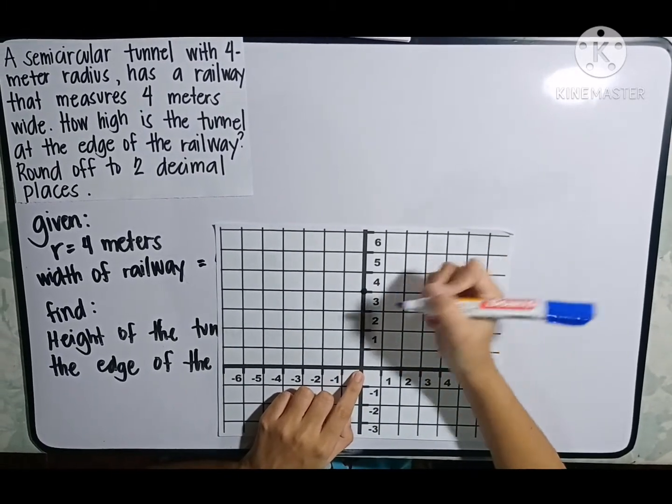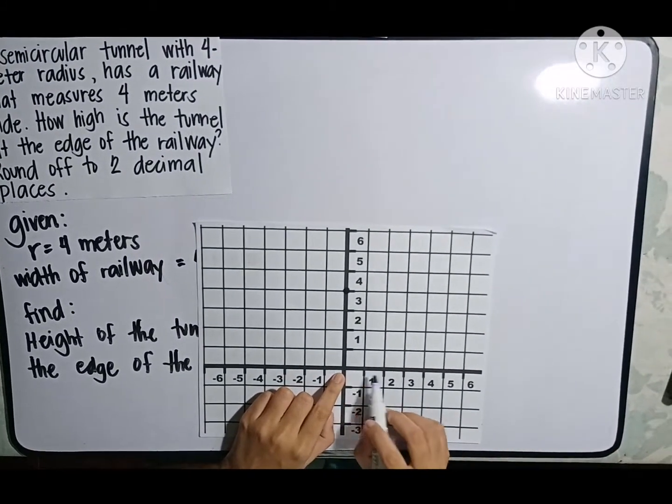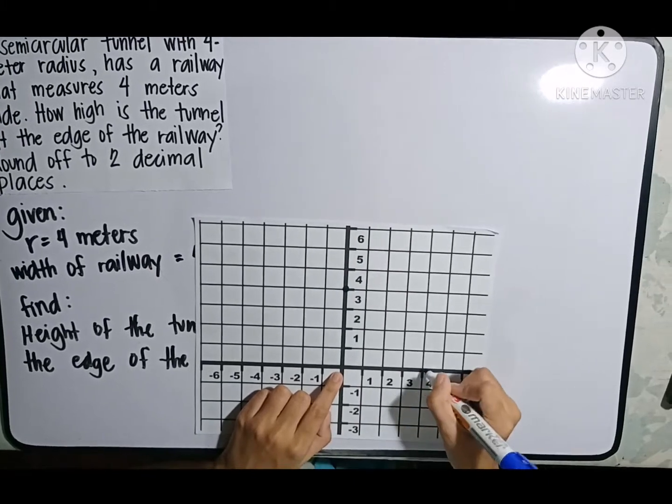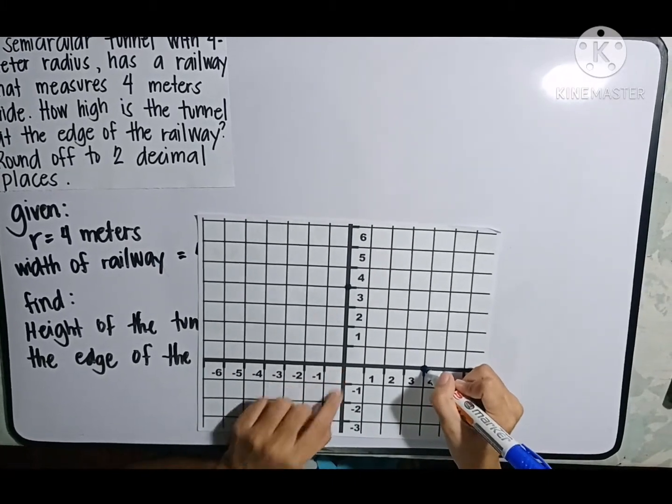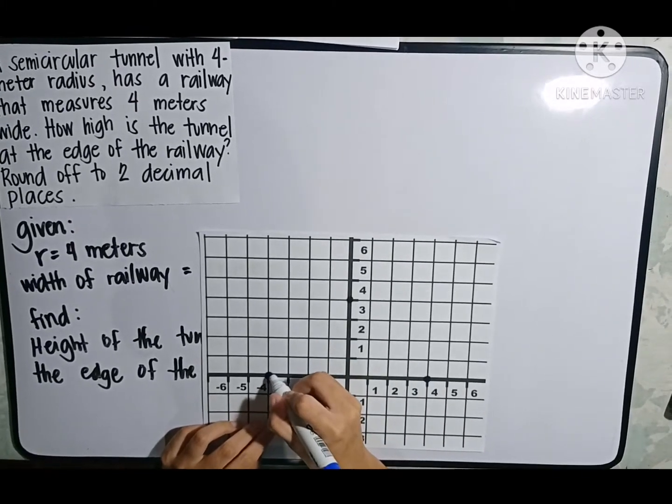So our semicircle is up to here. The 4 meter radius, 1, 2, 3, 4, is up to here. And 1, 2, 3, 4, is up to here on the other side.